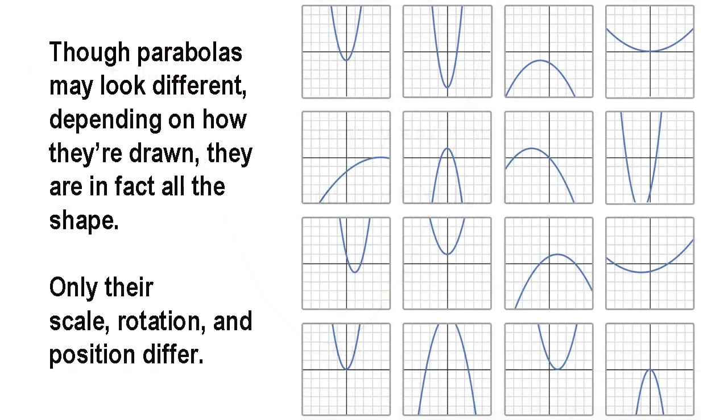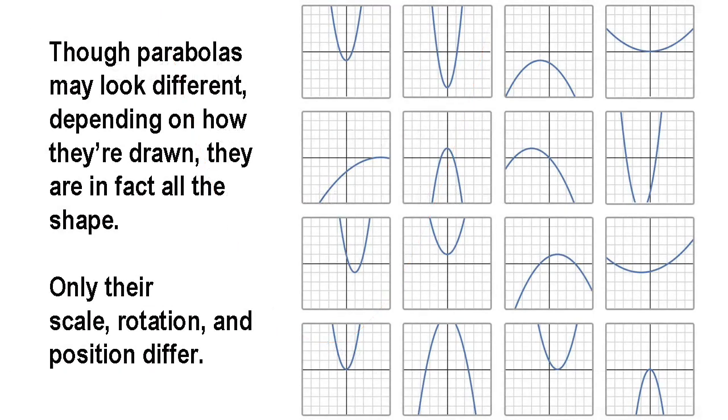Like the circle, but unlike the ellipse and the hyperbola, the parabola has only one distinct shape. In other words, any parabola can be superimposed exactly on any other parabola, simply by rotating, translating, in other words sliding, and or enlarging or shrinking it.